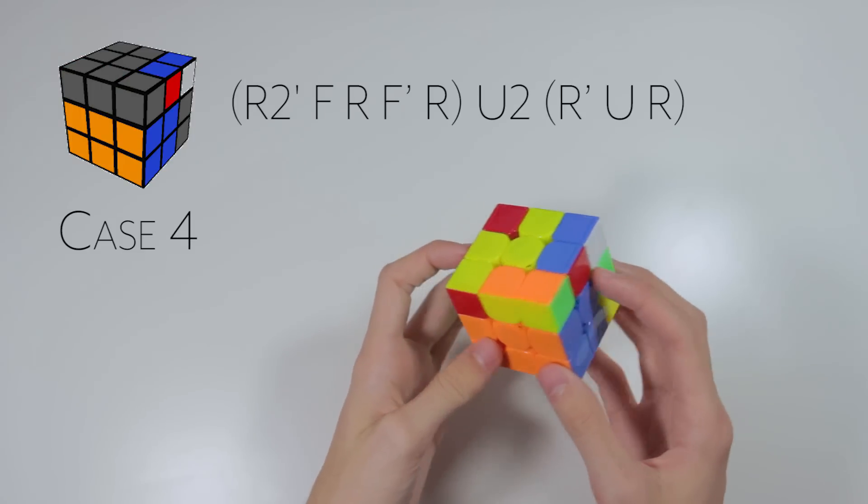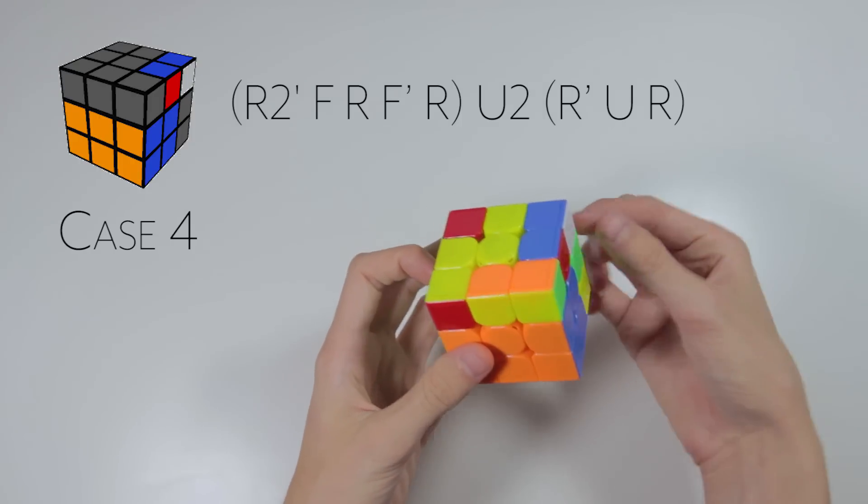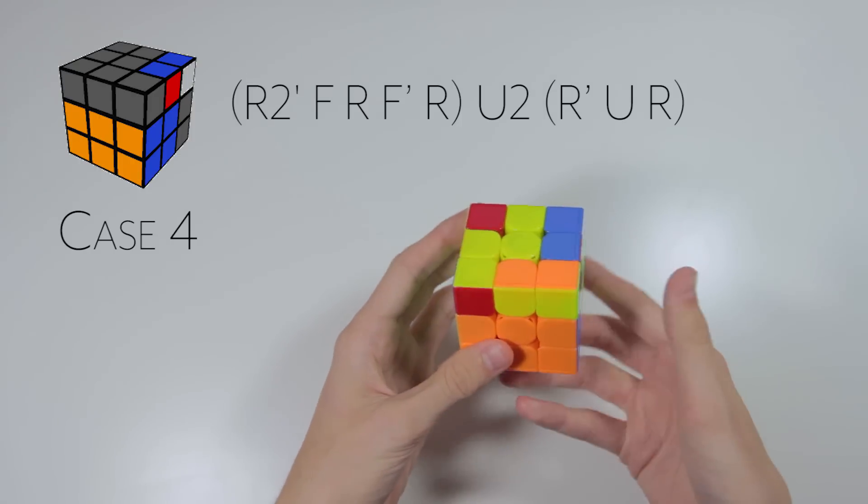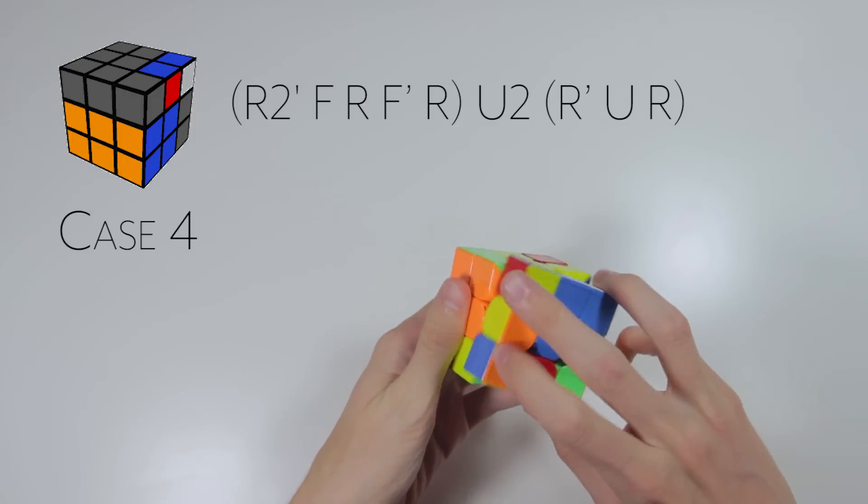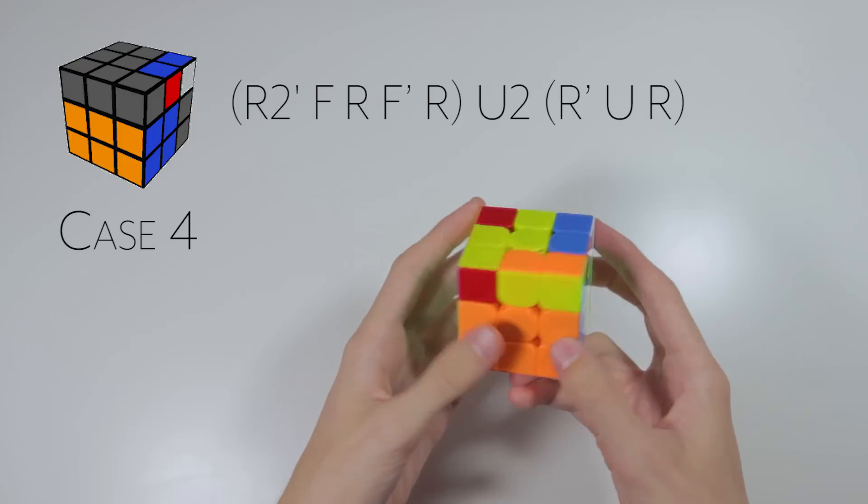The algorithm for this case is very similar to the last one, and is used to solve this case when it's in the back, right over top of the empty slot. So here's what that looks like. And quickly.